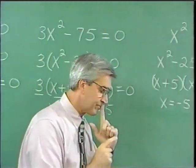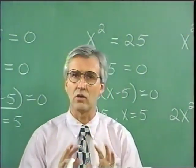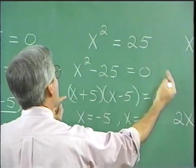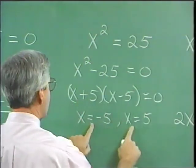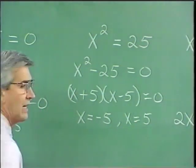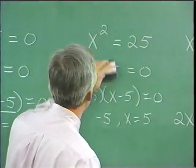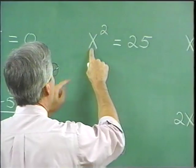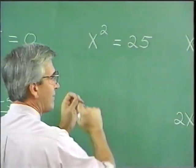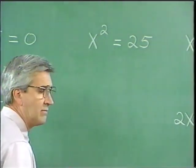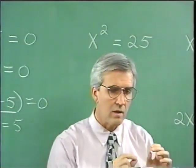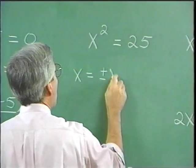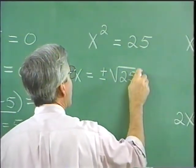We're going to talk about a new method of solving quadratics called extracting square roots. If we're faced with x squared equals 25, we could factor into the sum times the difference to get the two solutions. But there is another way: if x squared equals 25, what real numbers can be squared to give 25? Five can be squared to give 25, and negative 5 can be squared to give 25. We can find those values by taking the positive and negative square root of 25 — that is, x is equal to plus or minus the square root of 25. This is the notion of extracting square roots.